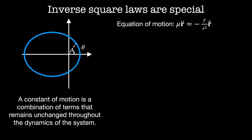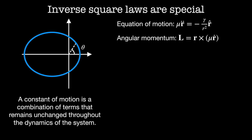The equation of motion for an inverse square law system is given by the reduced mass mu times r double dot, equal to minus the force constant gamma divided by r squared, and this force acts in the r-hat direction. Since there are no tangential forces in this system, angular momentum must be conserved. The angular momentum L is equal to r cross the momentum, which is mu times the velocity r dot.